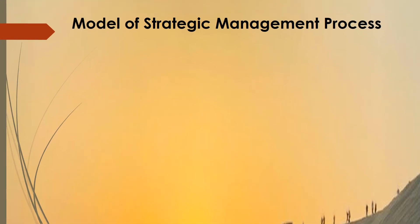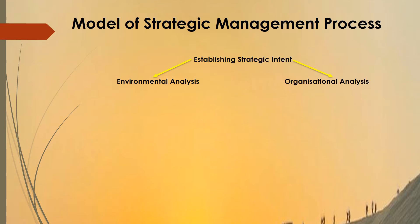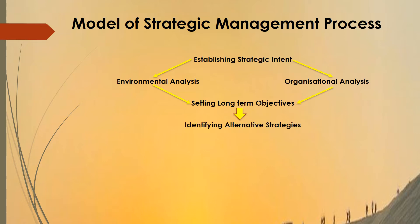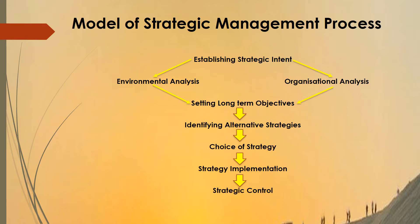The model of the strategic management process begins with establishing strategic intent, which is followed by environmental analysis and organizational analysis. On the basis of these, the organization sets long-term objectives, then comes identification of alternative strategies, followed by choice of strategy, then implementation of the chosen strategy, and finally strategy evaluation and control. The last step is feedback.